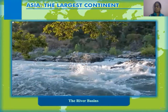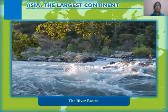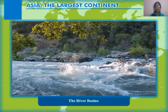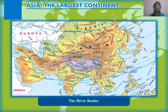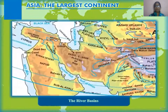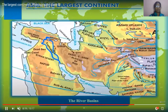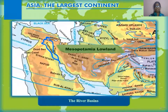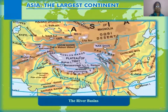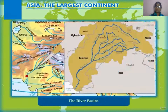The important rivers of Asia are the Yangtze, Huang He, Ganga, Brahmaputra, Irrawaddy, Euphrates, and Tigris. The Euphrates and Tigris rivers together form the Mesopotamian plain — the Mesopotamian lowland — which is very fertile, and in which the Mesopotamian civilization developed.